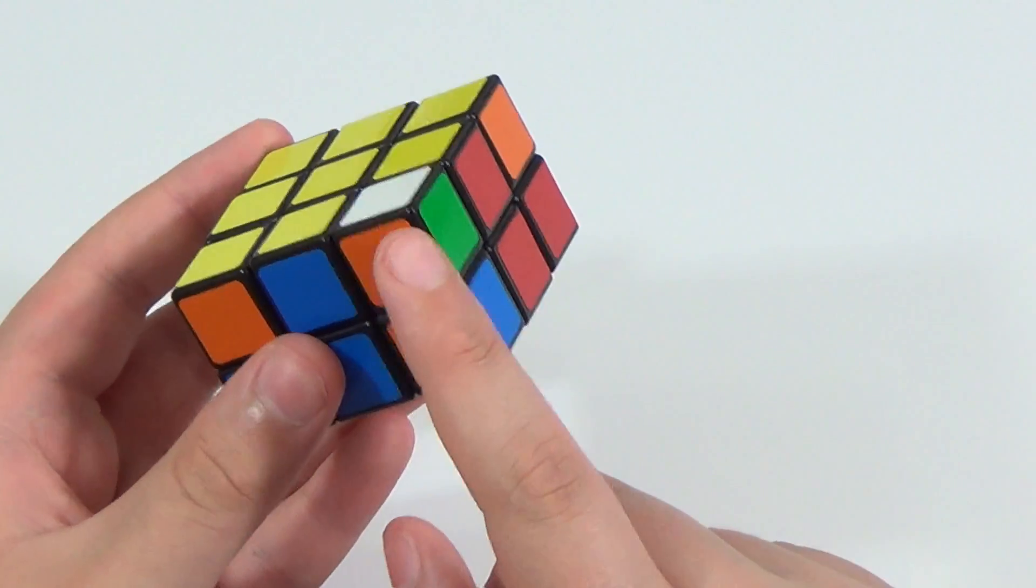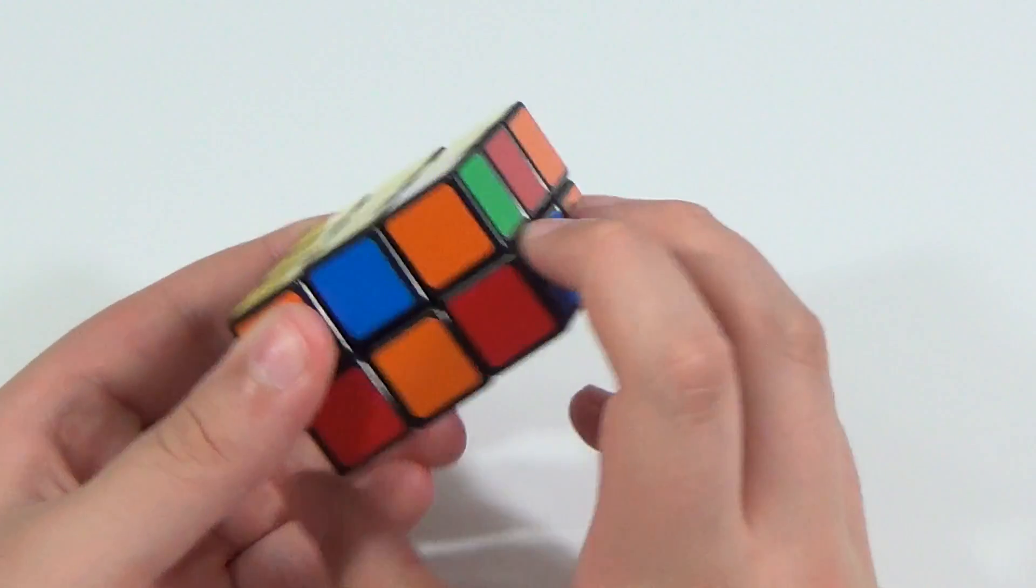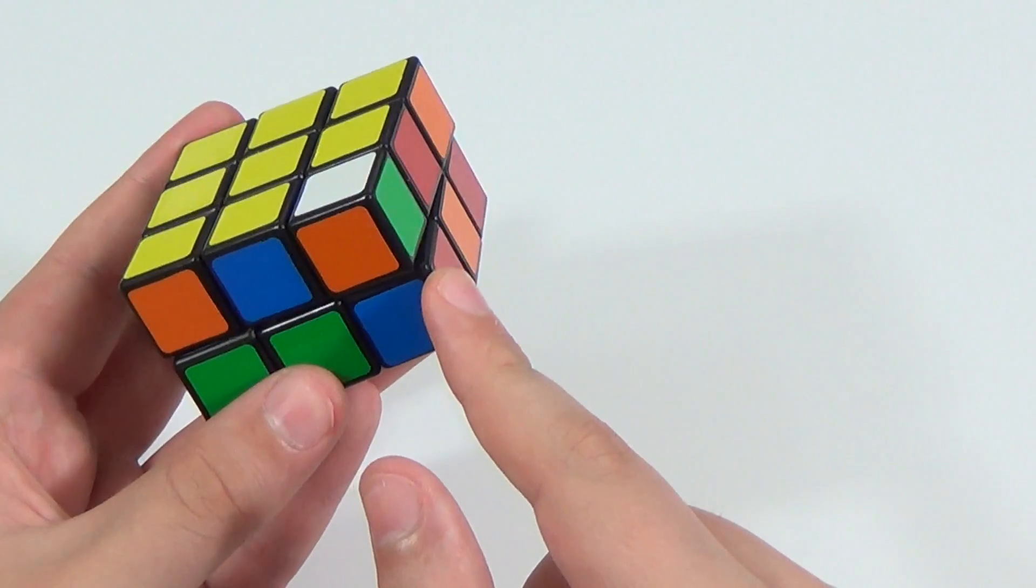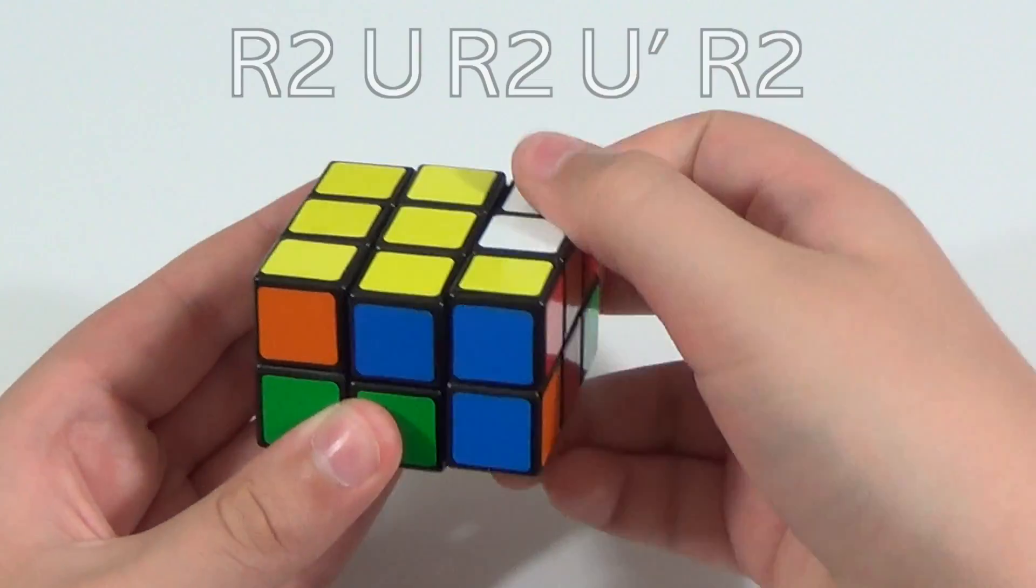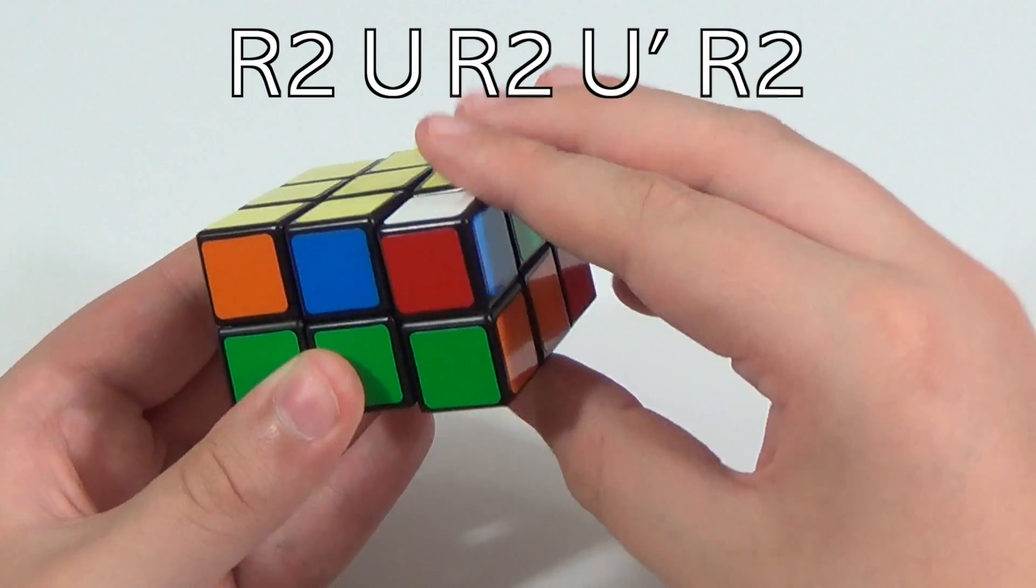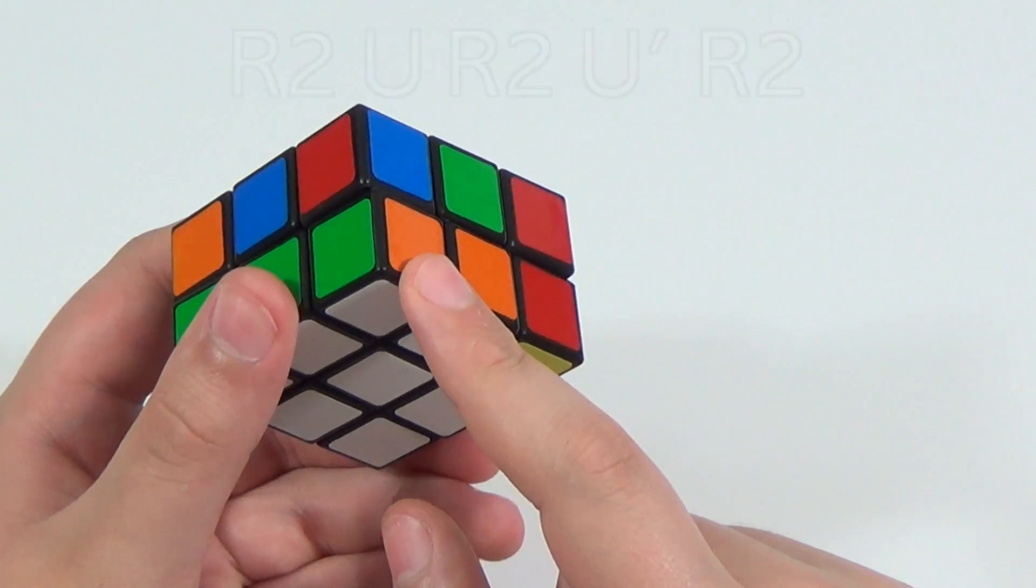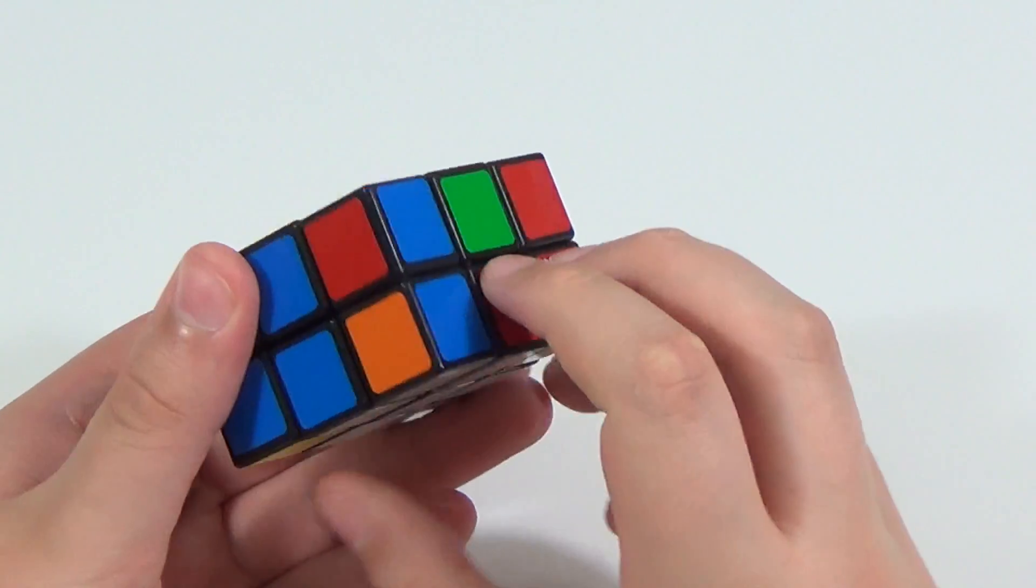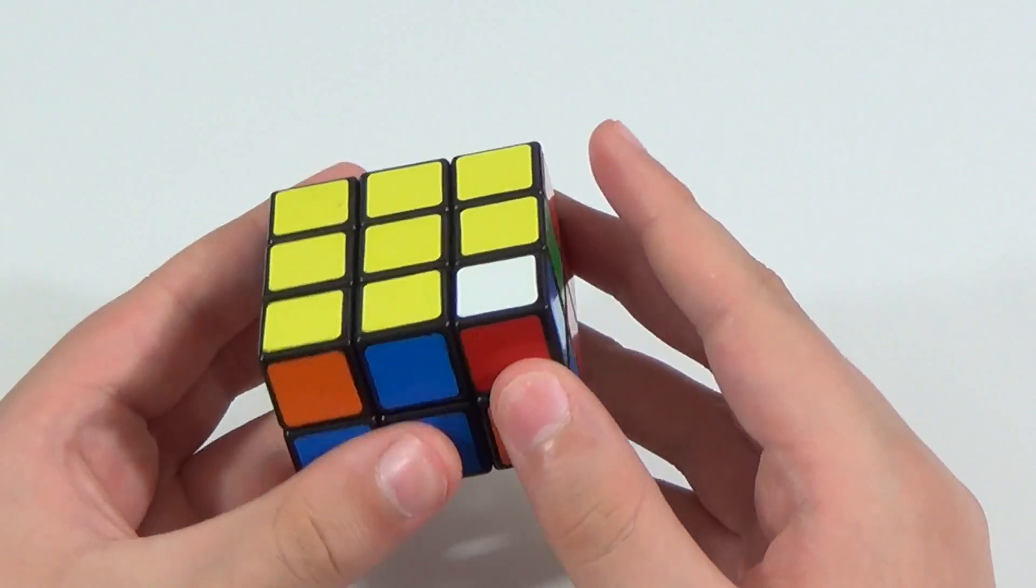So now for the next corner, which is this one here, we'll do the same thing. We'll rotate the bottom layer until it arrives just above the place where it needs to go. And we will do the same algorithm: r2, u, r2, u prime, r2. And doing that algorithm brought out this red, white, blue corner here. And we'll turn that to its spot it needs to go, and do the same algorithm.